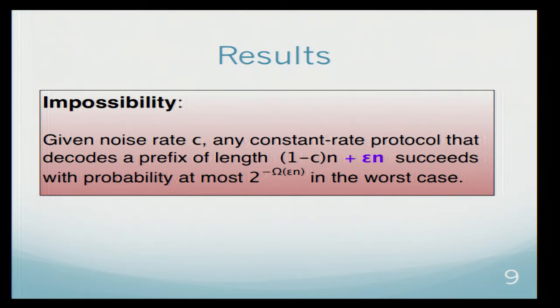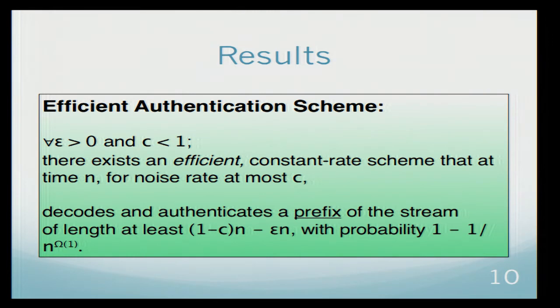However, more interesting than this impossibility result is our positive result. We actually show that it is possible to achieve at least 1 minus c fraction of the stream. So for every noise level c, we show an efficient scheme which has constant rate.